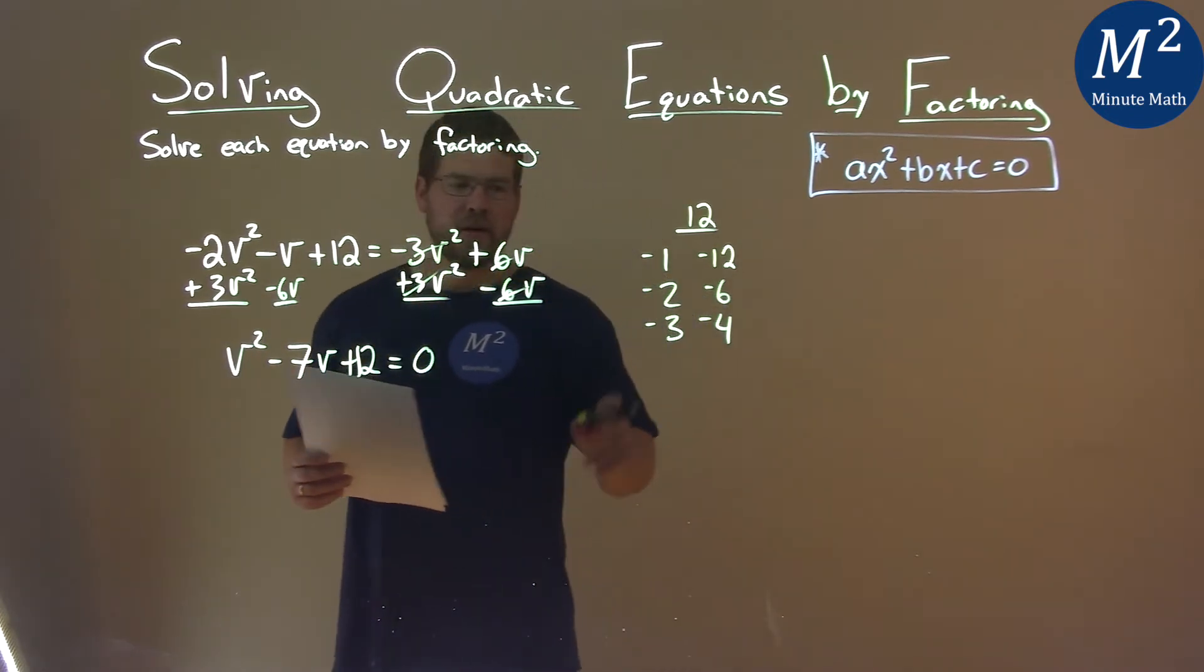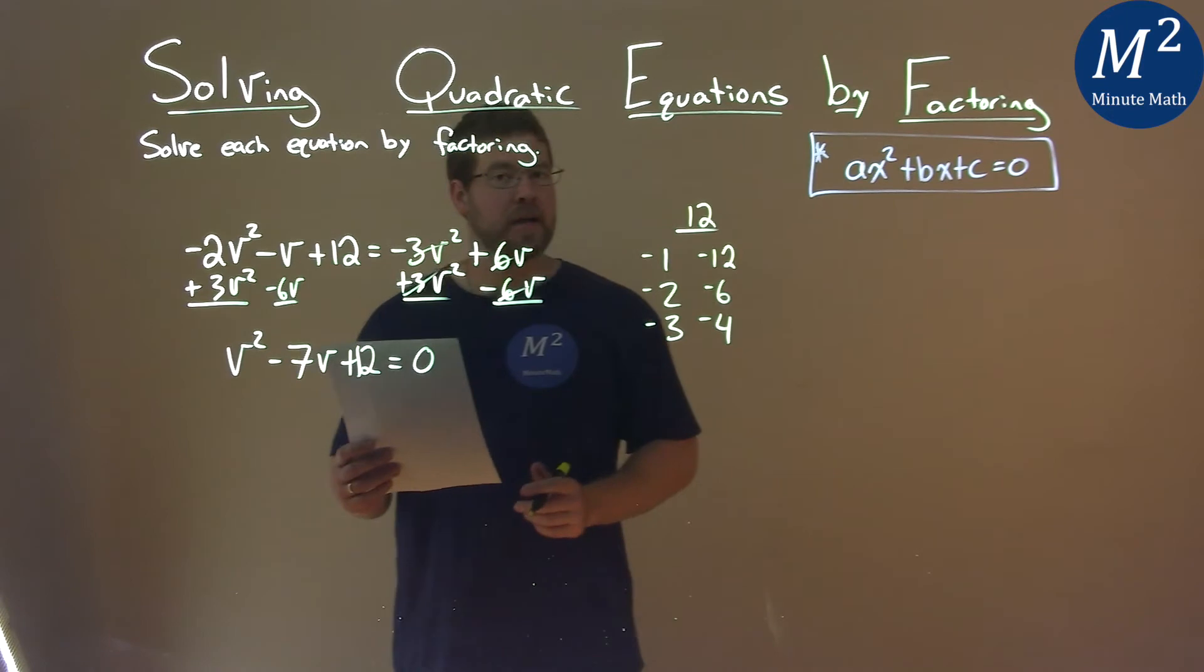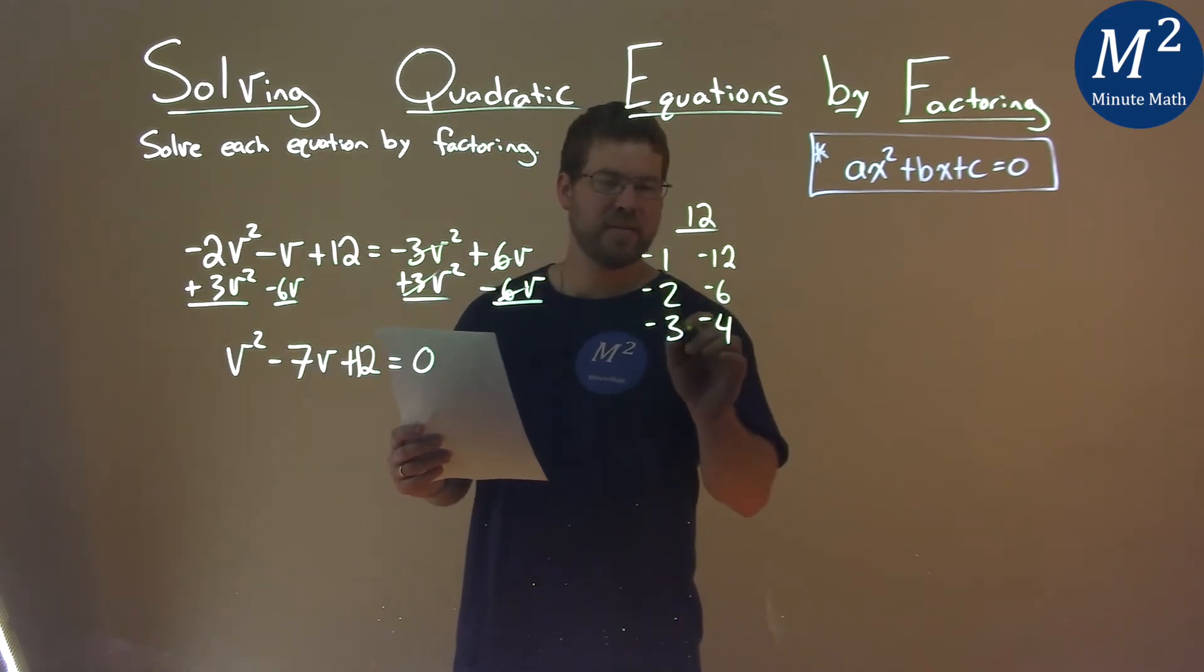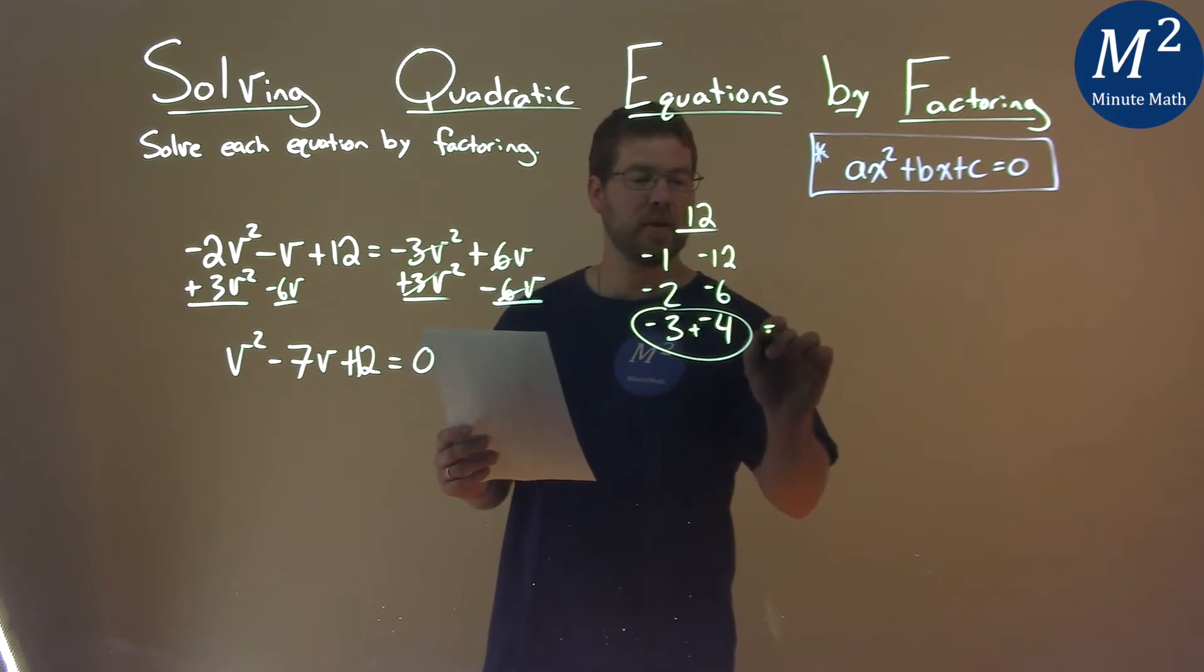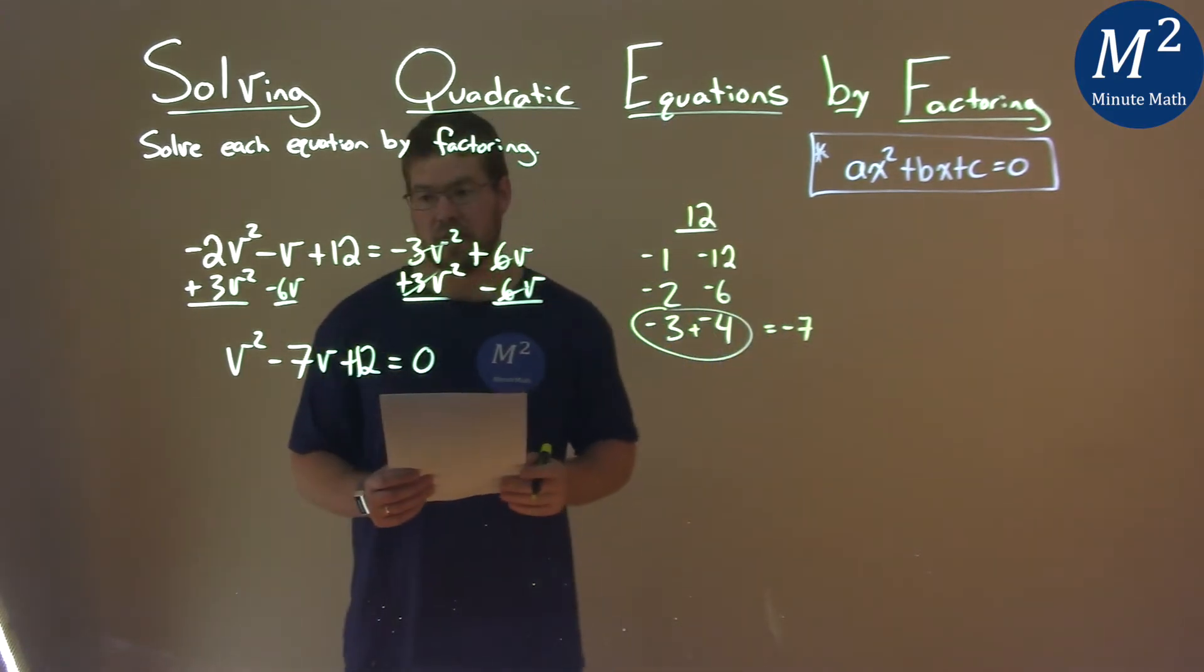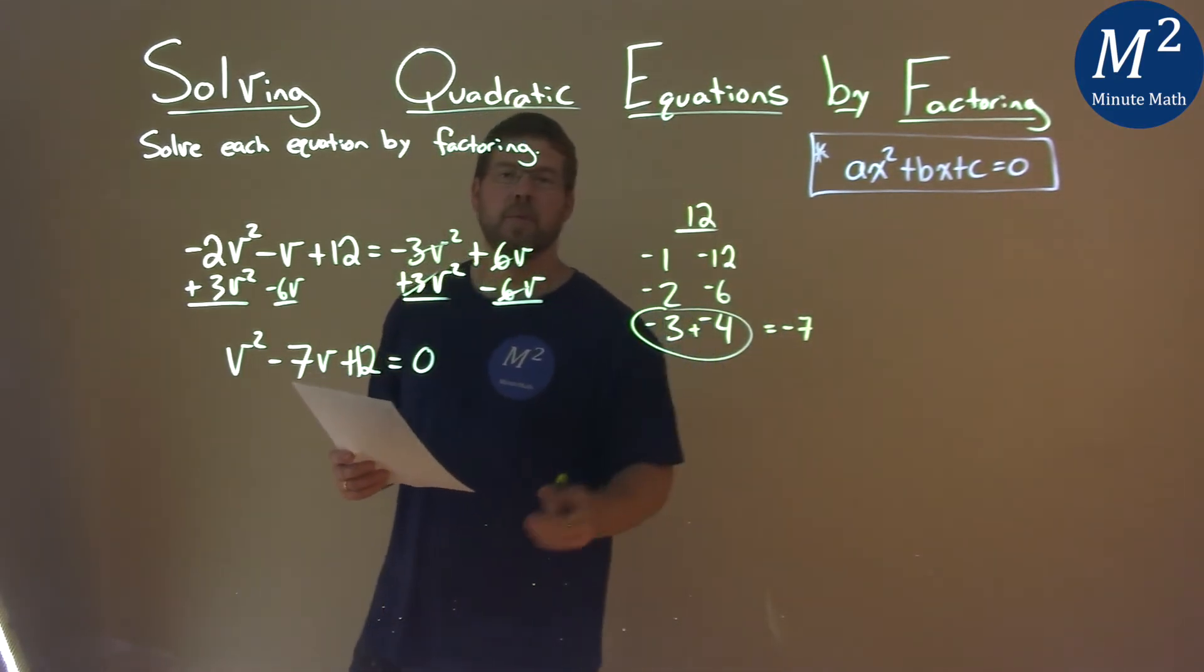So now find what two added together equal -7, and hopefully that's the 3 and 4. -3 + -4 = -7. So these are the two numbers that we're going to use to factor.